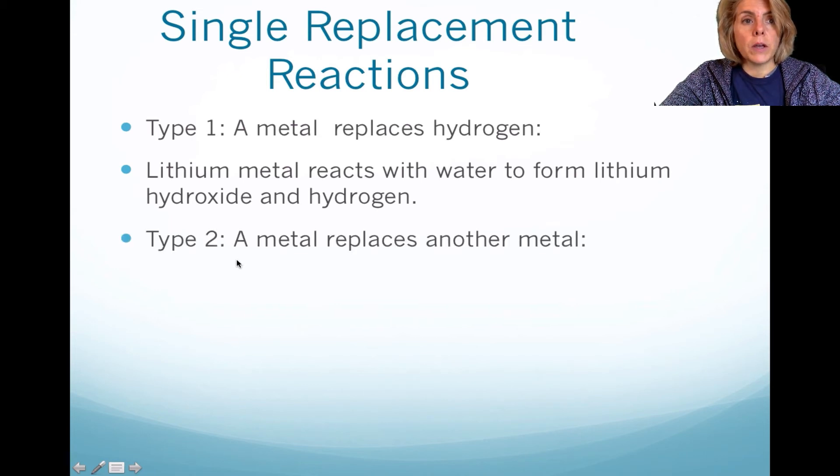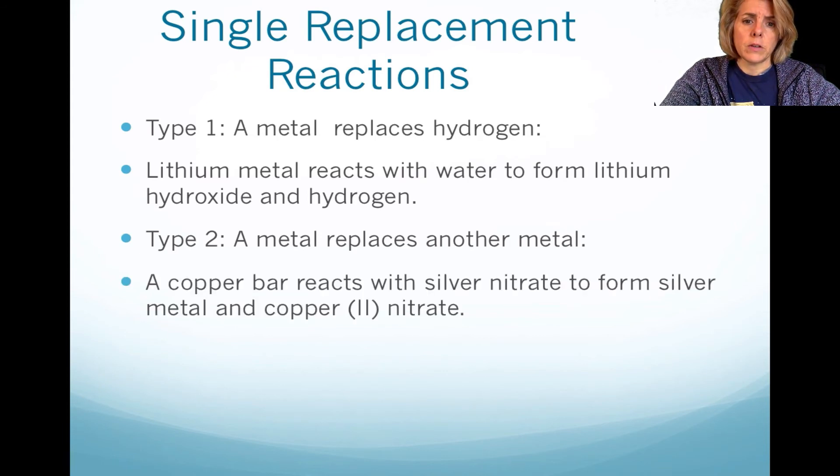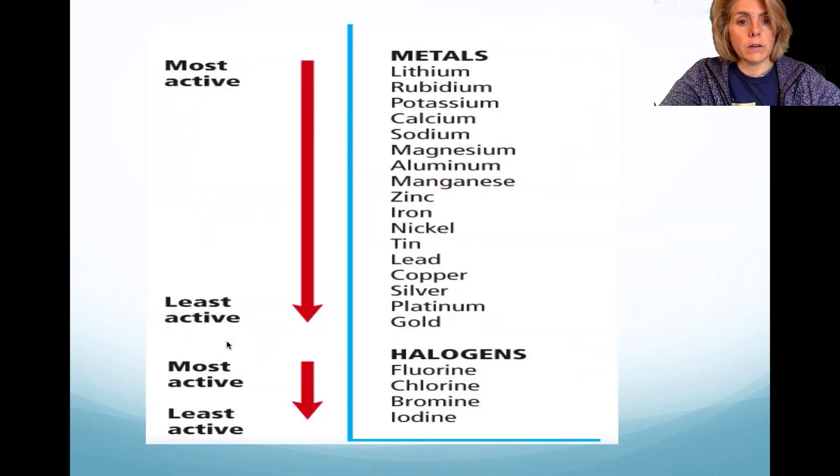Also, we can have situations where the element that's by itself as a reactant will replace another element that is combined with a second element. And as a result, we will only see an element by itself in the product. So here we have copper reacting with silver nitrate. And as a result, in the product, we see silver metal by itself and copper nitrate. Now, how does this work?